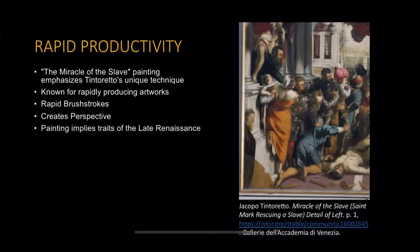Saint Mark can be seen on the top right, casting light throughout the painting. This art piece emphasizes Tintoretto's fast productivity, which is the main technique he widely uses when making artworks. The brushstrokes are rapid in quick succession, and by looking at the figure in armor to the left of the painting, you can see how Tintoretto's quick brushstrokes create a sort of glimmer and the perspective of light being absorbed into the armor.